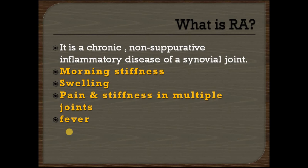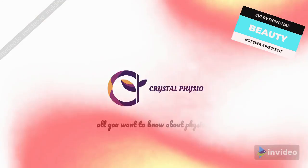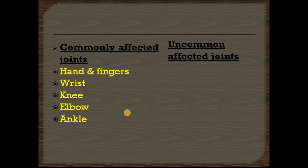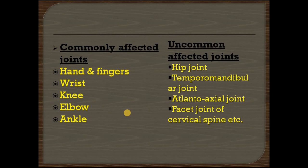Some deformities are also seen in RA patients, especially in their toes and fingers. In today's lecture we will talk about the different deformities present in RA patients. RA mainly affects the joints of the hand and fingers, wrist, knee, elbow and ankle. The less affected joints are the hip joint, temporomandibular joint, atlanto-axial joints and the facet joint of the cervical spine. Deformities in rheumatoid arthritis are mainly seen in the hand, foot, elbow, ankle and knee.